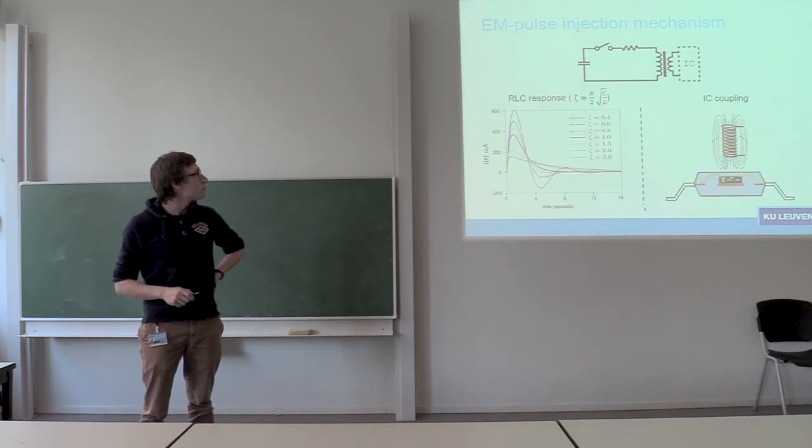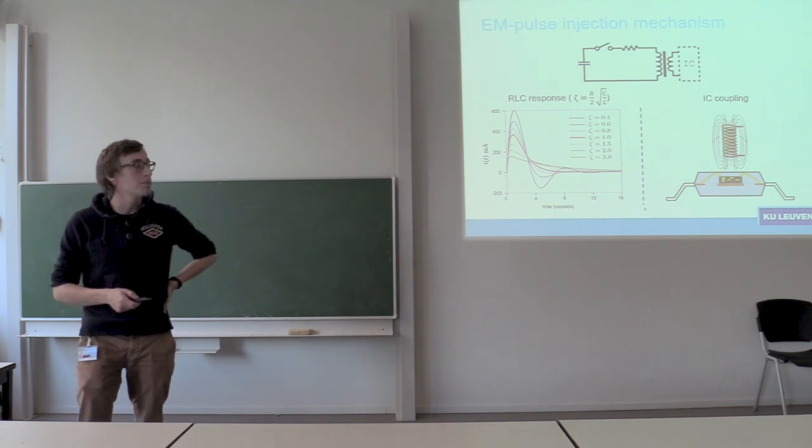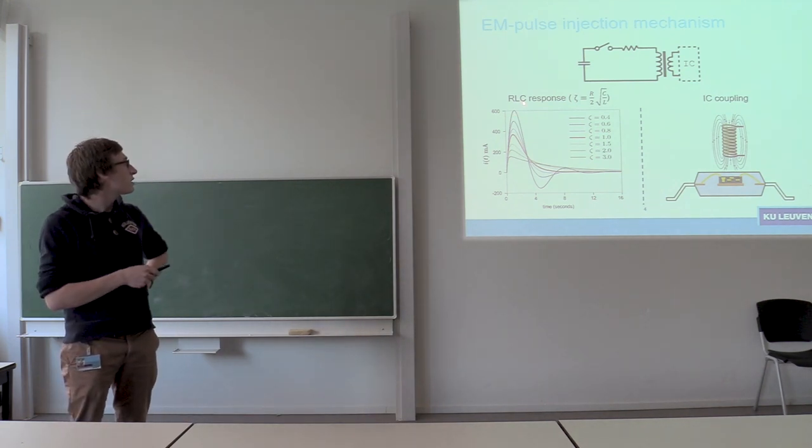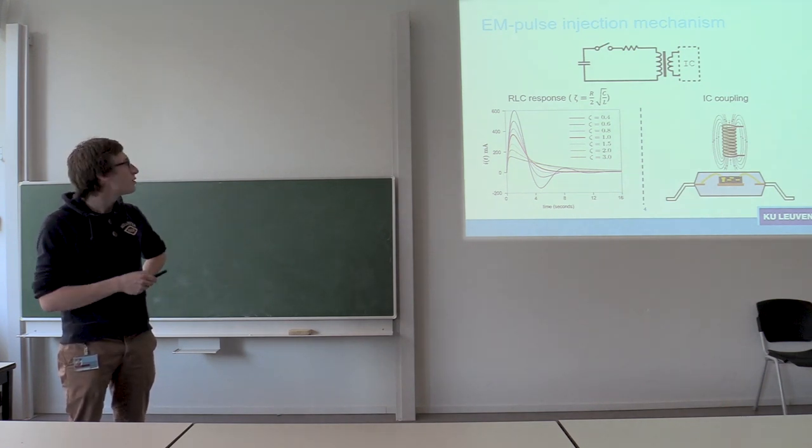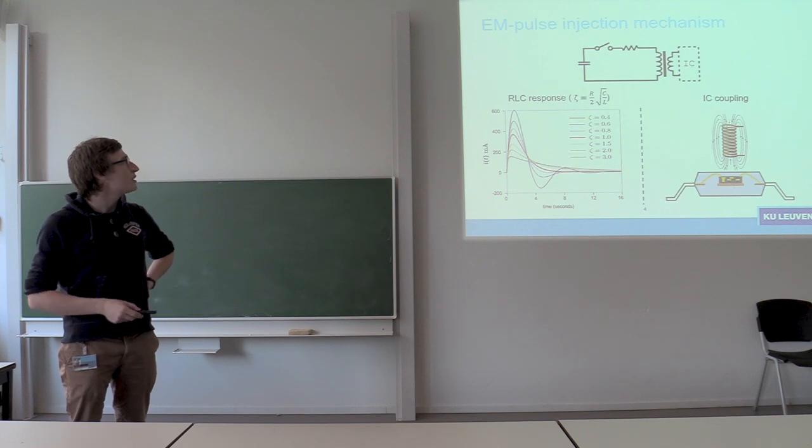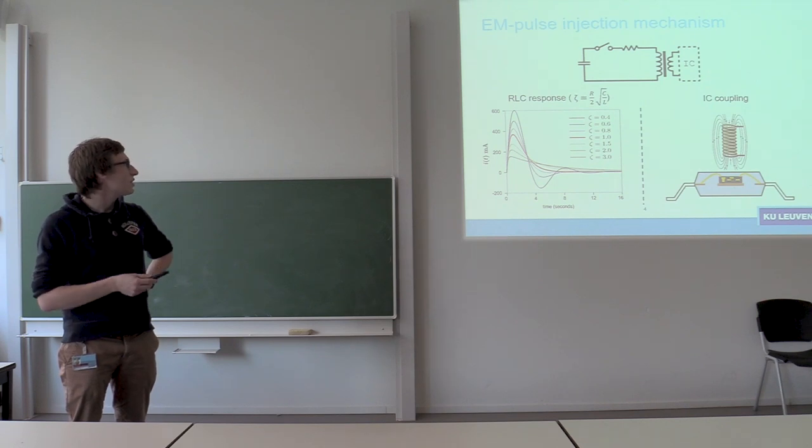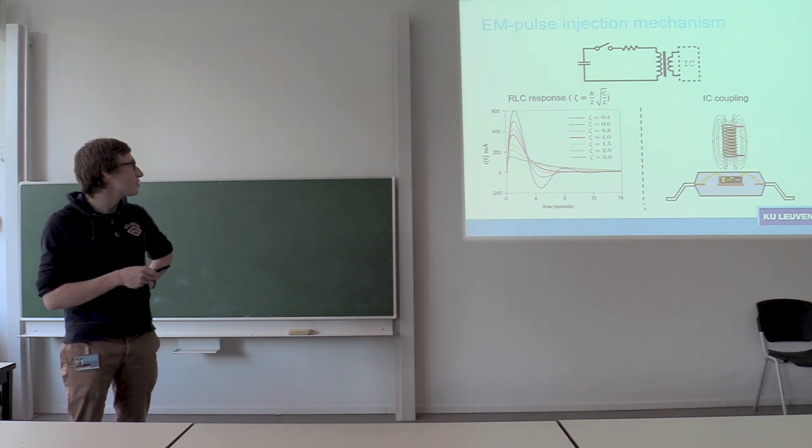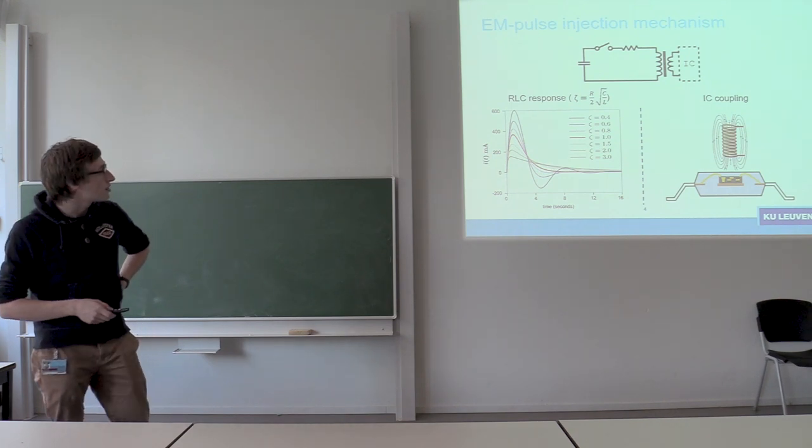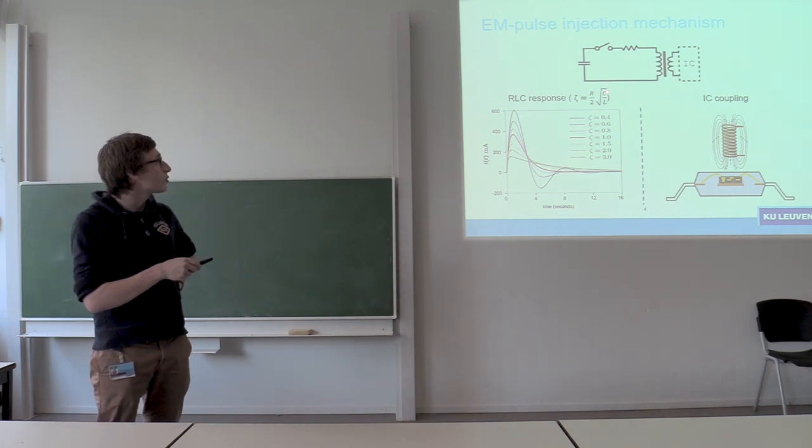That occur during EM pulse injection and that happen within your EM pulse injection setup. So one is you have this RLC loop, and everybody who picked up a first year physics course will recognize this thing. So depending on how you pick these components - the capacitor or your solenoid, your inductor and your resistor - you will have a different time response. So if you pick a large resistor for instance, you will have a lot of damping and you will have an overdamped response. If you choose a very small resistor, you will have harmonic oscillations in your response.